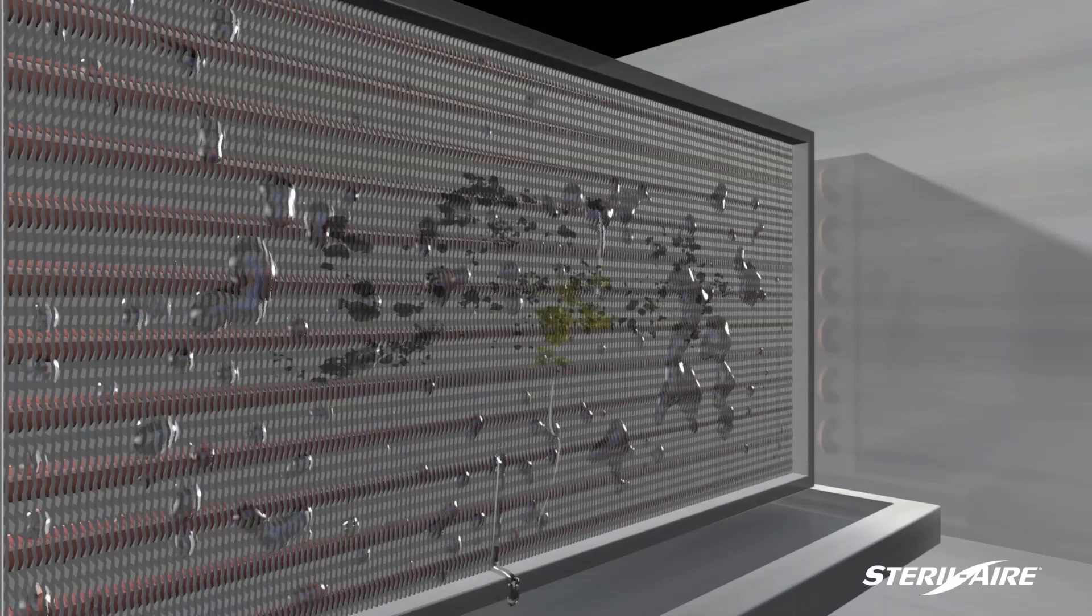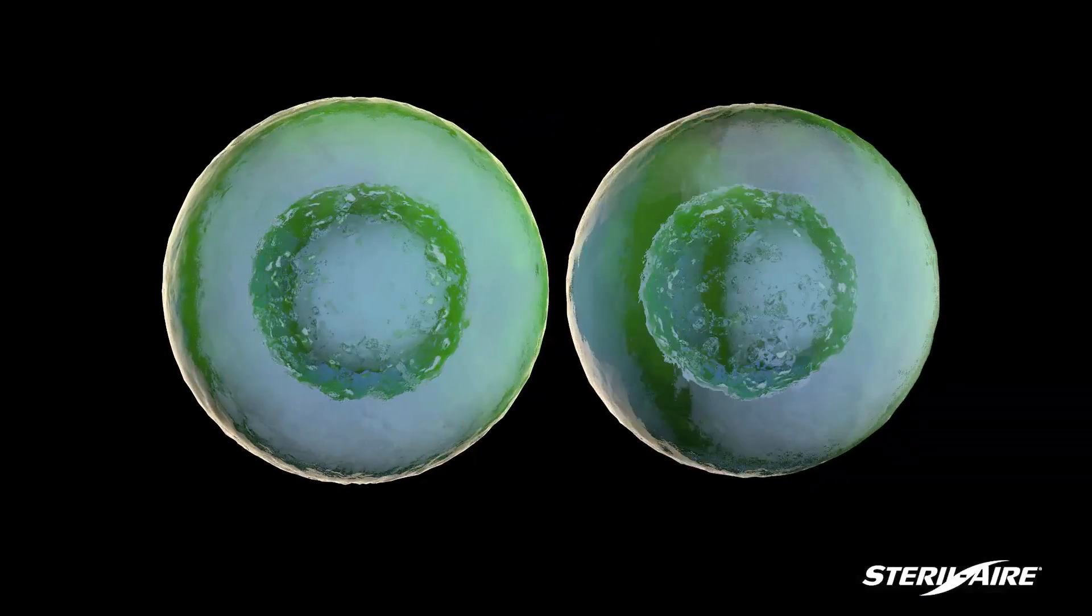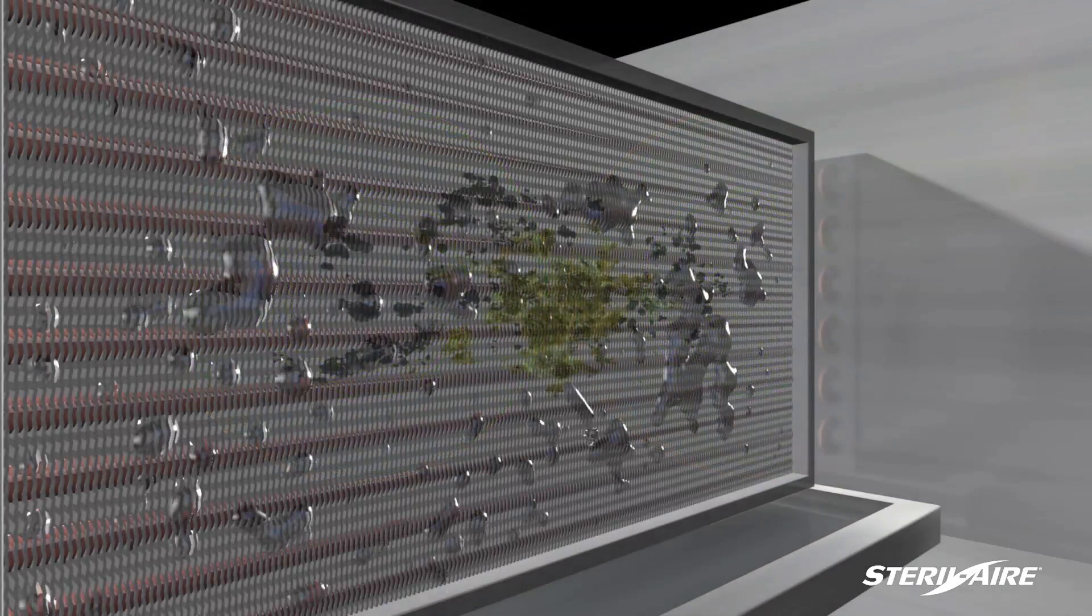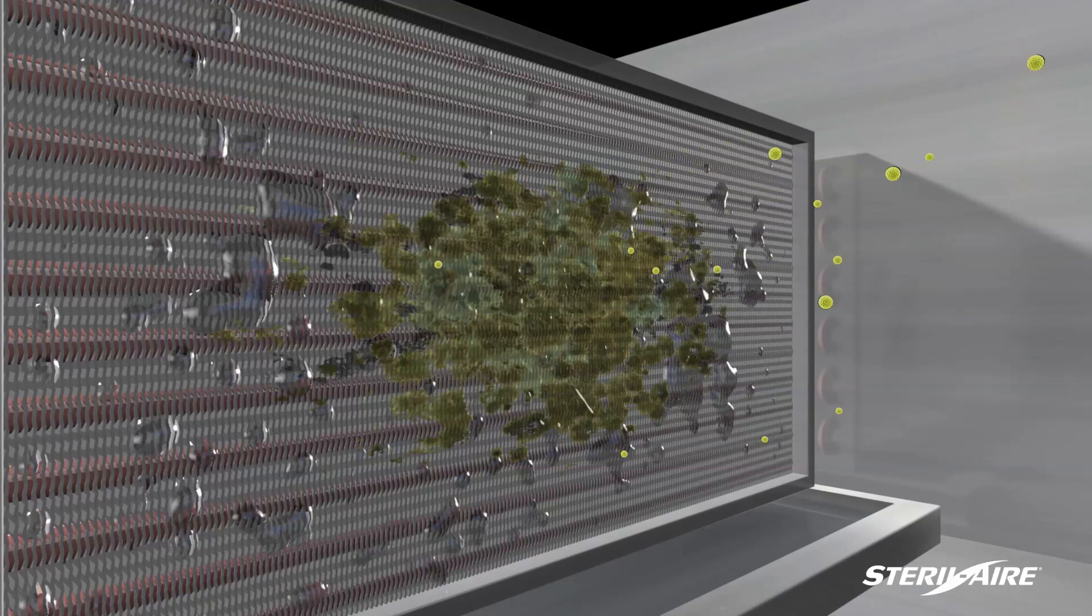We now know that as soon as the condensate is produced, mold and biofilm start growing. Mold takes four to six hours to double, so it can easily multiply into a billion organisms in 12 days. As long as it's alive, it will cling to the coil fin.